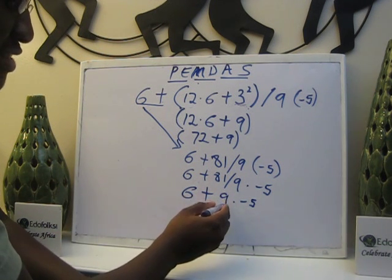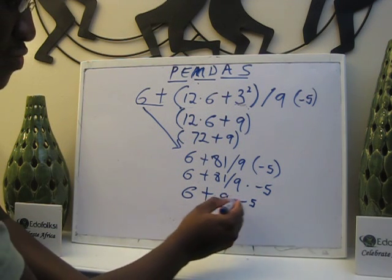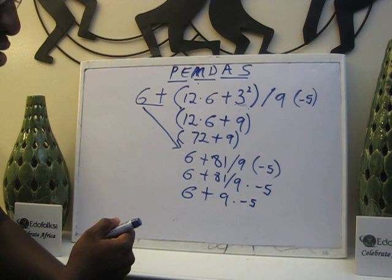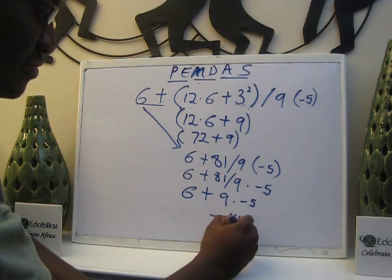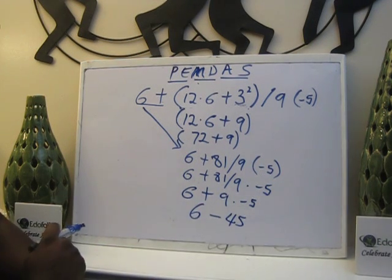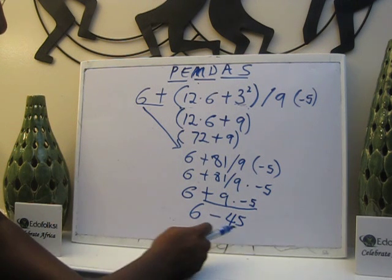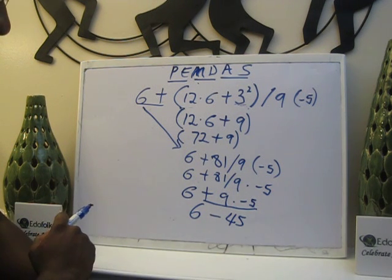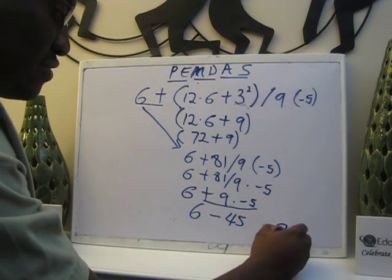Plus 9 multiplied by negative 5, the signs are different. When you multiply and the signs are different, it's a negative. So 9 times negative 5 is negative 45. The 6 comes down, so your answer is negative 39.